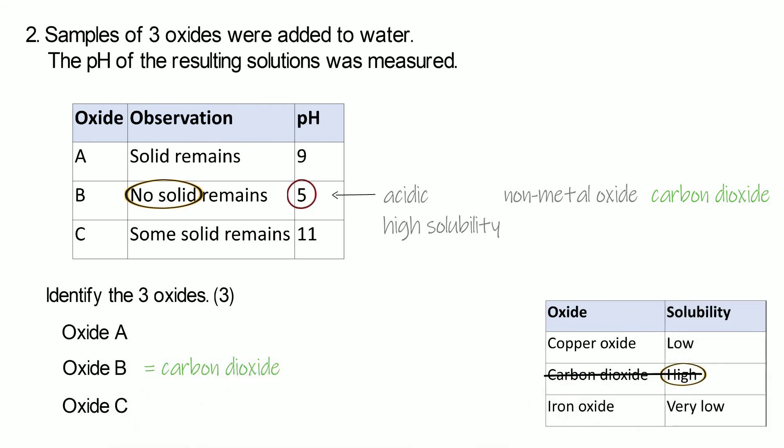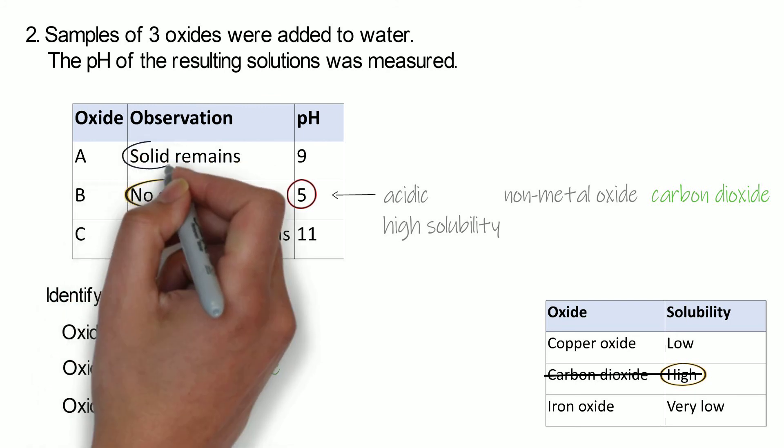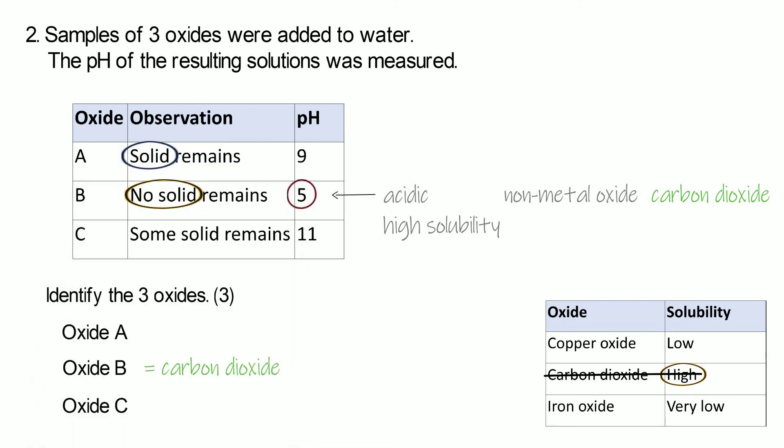Now we've got two left there. They're both going to be the metal oxides because they've got high pHs in the solution that's formed. But we don't know which one's which. Which one's copper oxide? Which one's iron oxide? If we look at A, all of the solid is left. That means it's got a very low solubility. And our table tells us that iron oxide has a very low solubility. So that tells us that A is going to be iron oxide.